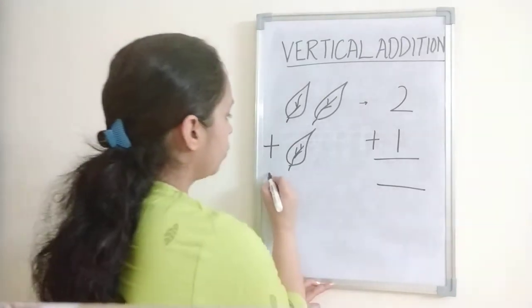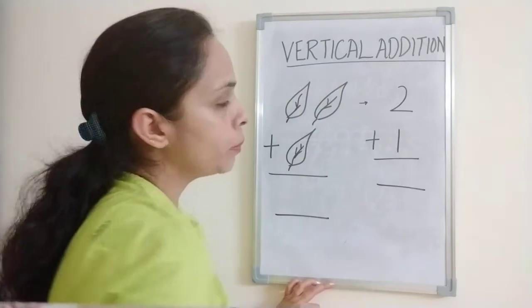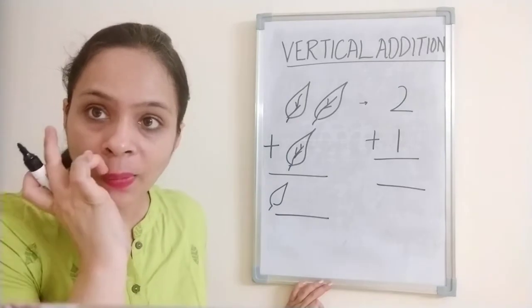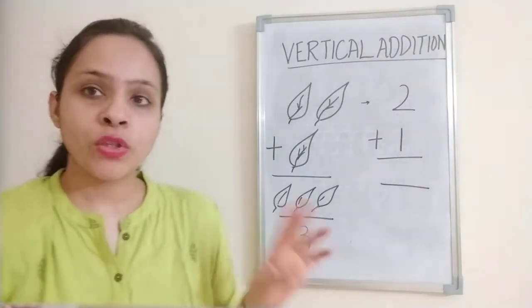Two plus one. Here I show you the addition with pictures. I am telling you both. And here I am doing the addition of numbers. So how many leaves are here? One, two, three. So here the number of leaves are three. Now here, two and one, how can we do addition with numbers?